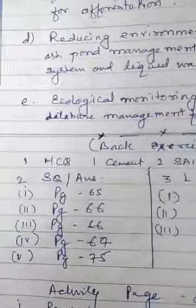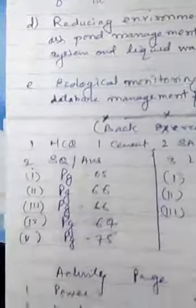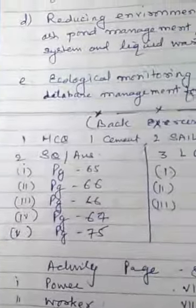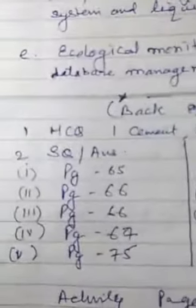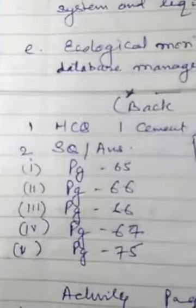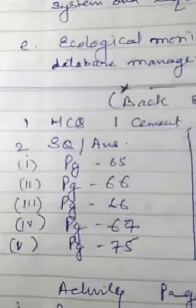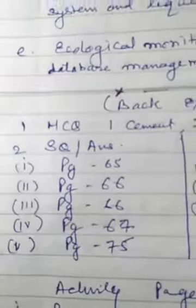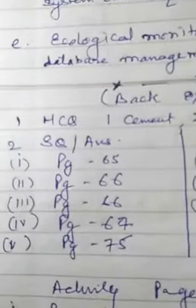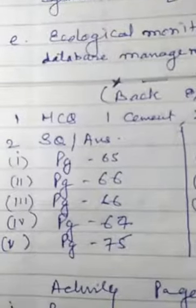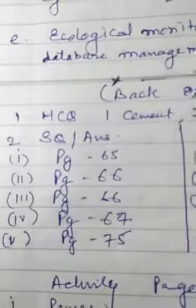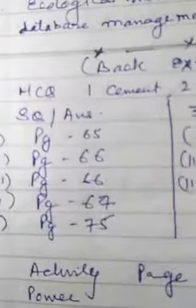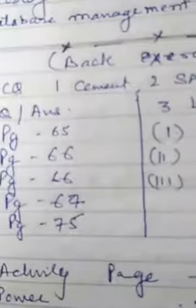Short question answers, question number 2: first one is on page 65, second one is on page 66, third one is on page 66, fourth one is on page 67, and fifth one is on page 75.